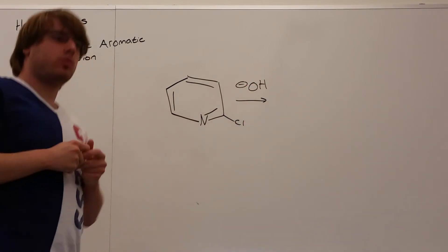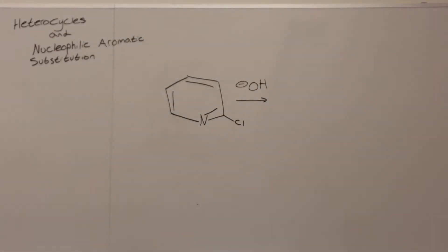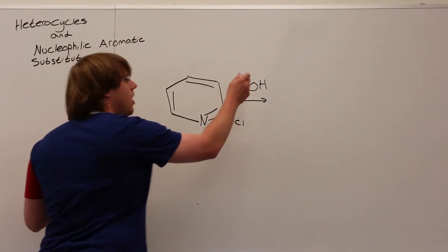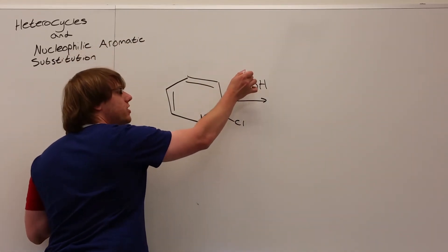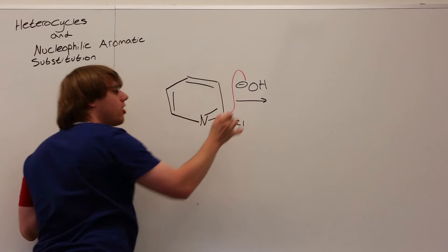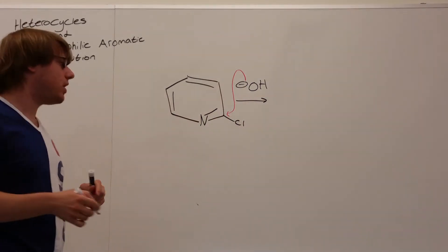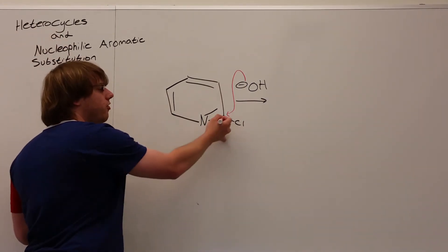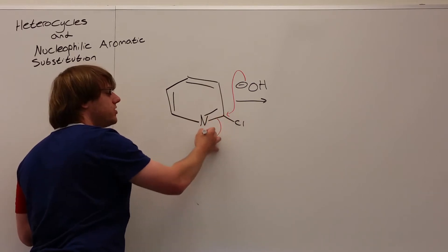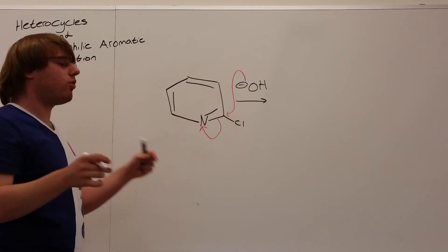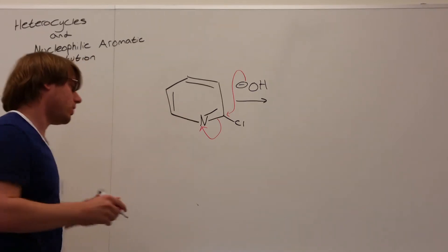So the way this mechanism works is the thing over the arrow with the electrons will come in and attack the carbon that has the leaving group. And then the electrons from the carbon-carbon double bond will resonate until they end up on the nitrogen.